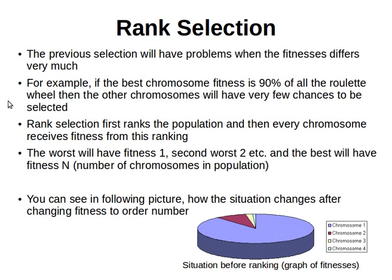With rank-based selection, what happens is we first rank the population, and then every chromosome receives fitness from its ranking. We compute all the fitnesses of all the chromosomes in our population, create an array of those fitnesses, and sort the array in ascending order. So the lowest fitness is the first element, the second lowest is the second element, and so on. The worst chromosome gets rank 1, the second worst gets rank 2, and the best gets rank n, the number of chromosomes in the population.